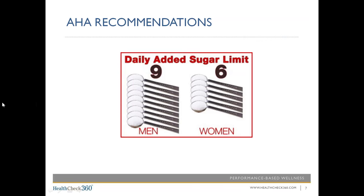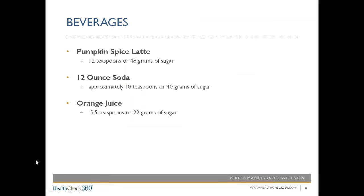On the next few slides, we'll put this into better perspective with some examples. Starting with beverages — one of the biggest culprits of added sugar. It's November, and a popular seasonal drink is the pumpkin spice latte. A 16-ounce pumpkin spice latte without whipped cream from one of the most popular coffee shops contains 12 teaspoons, or 48 grams of sugar. That is double the amount a woman should consume in an entire day, just in that one drink.